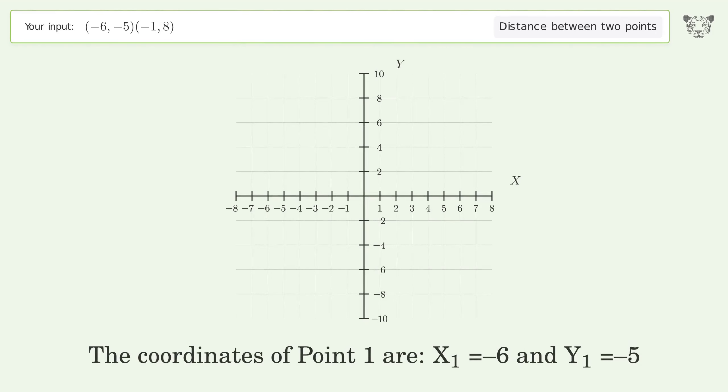The coordinates of point 1 are x1 equals negative 6 and y1 equals negative 5. The coordinates of point 2 are x2 equals negative 1 and y2 equals 8.